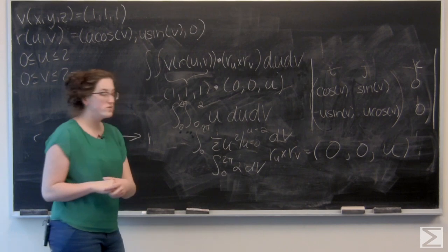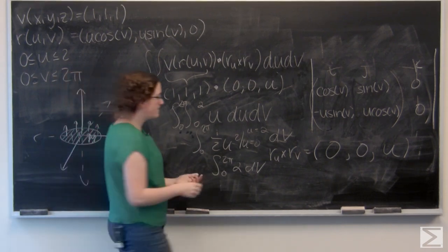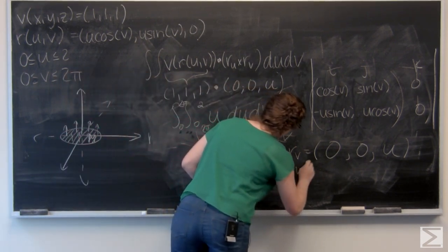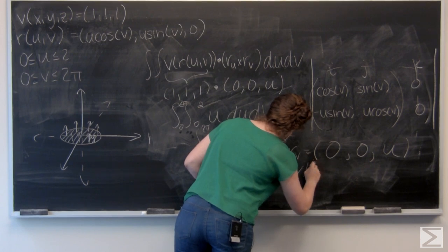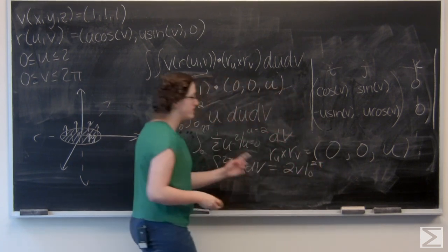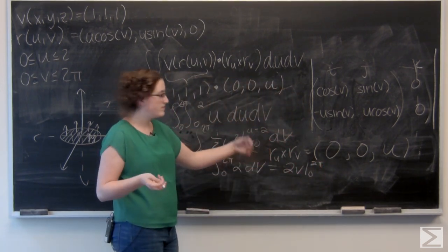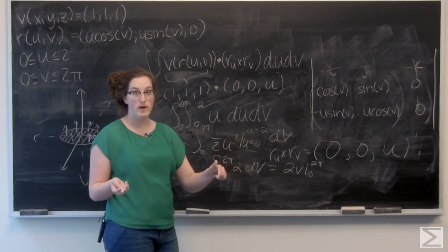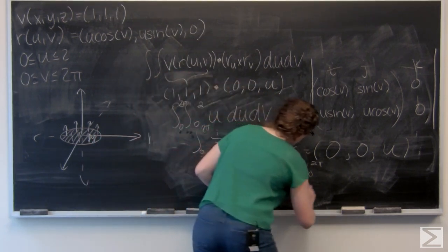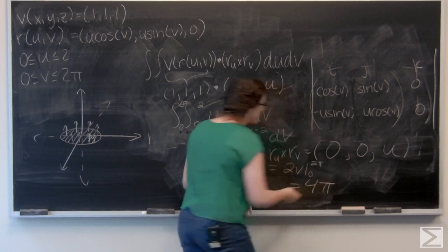So now I just want to integrate 2 with respect to v. That's going to give me 2v. Evaluate from v equals 0 to v equals 2 pi. So plug in 2 pi, and I get 4 pi.